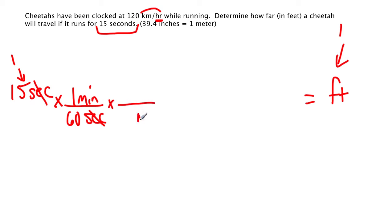Now I have minutes, and I want to get minutes to cancel because I want to get closer to hours. So 60 minutes equals one hour. Minutes is gone. Now I have hours, then I can use this conversion factor. I know that 120 kilometers is the distance a cheetah can travel in one hour. So 120 km per one hour.